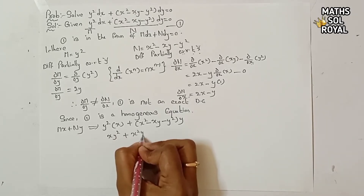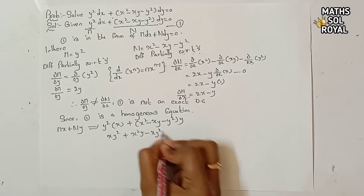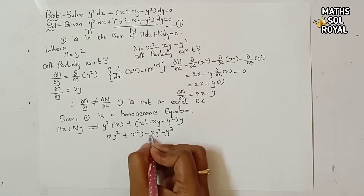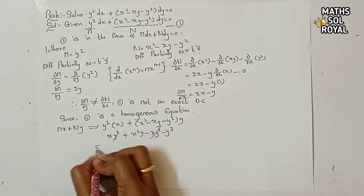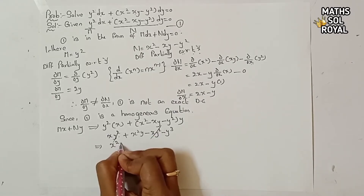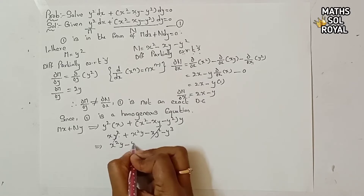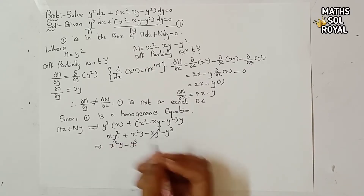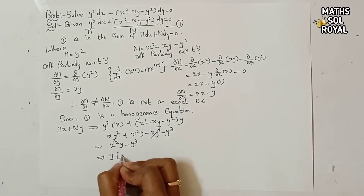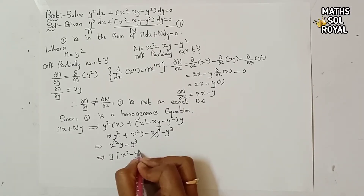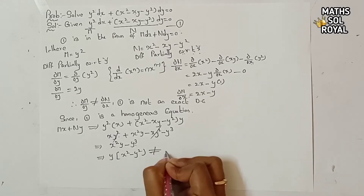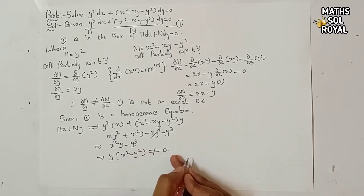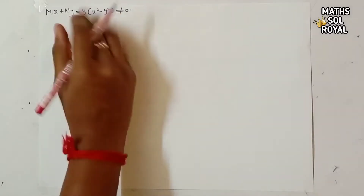Expanding: Mx + Ny = xy² + x²y - xy² - y³. The xy² terms cancel, leaving x²y - y³. Factoring out y: y(x² - y²). Since this is not equal to zero, the integrating factor exists.